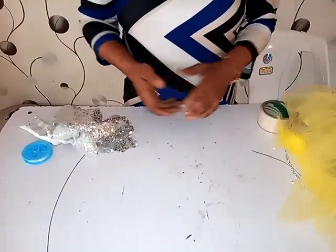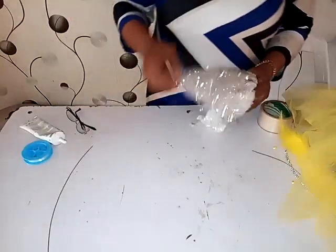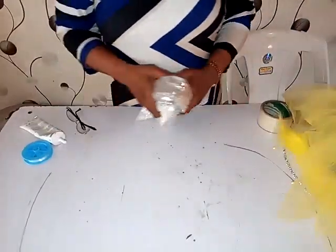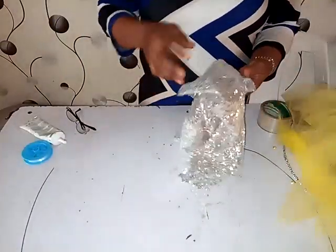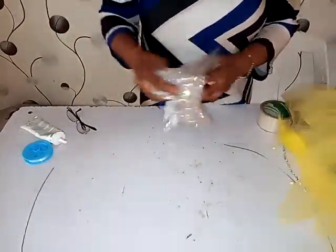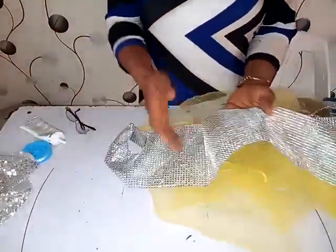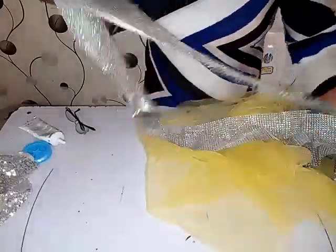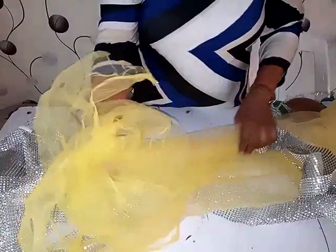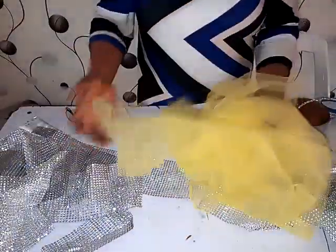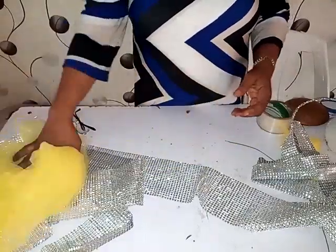Now, the first thing we are going to be doing is to show you the materials we will be needing for this fascinator. As usual, I have my sequence. Remember, this is the sequence I removed from the hand fan. Now, I have my bling, the smaller type of bling bling. I bought this from the tailor shop. I have the normal nets we use for our dresses. You can still use it for your fascinator.